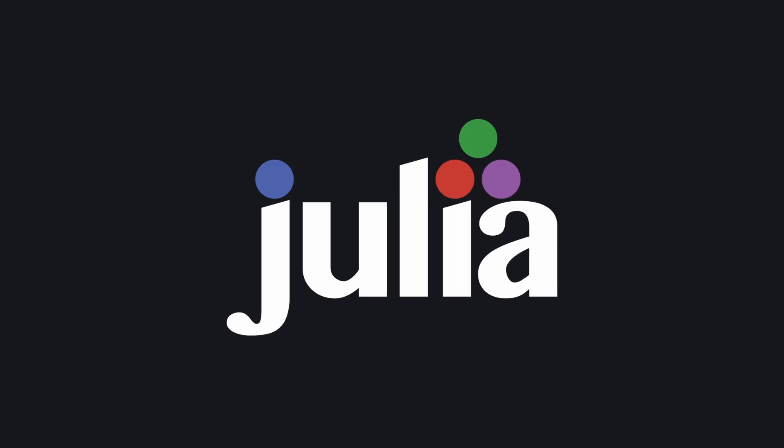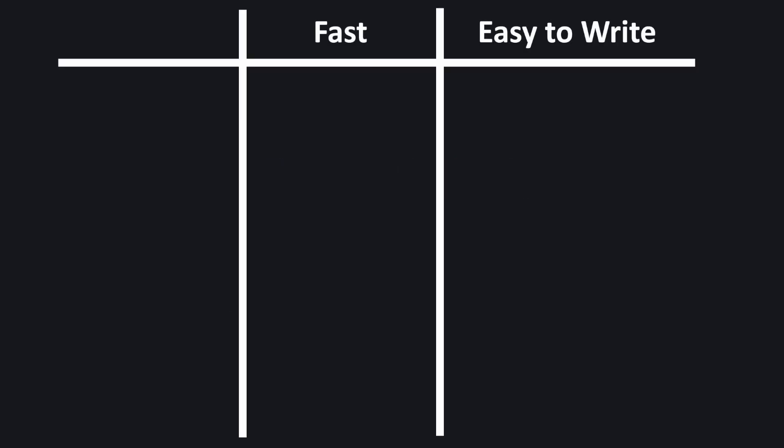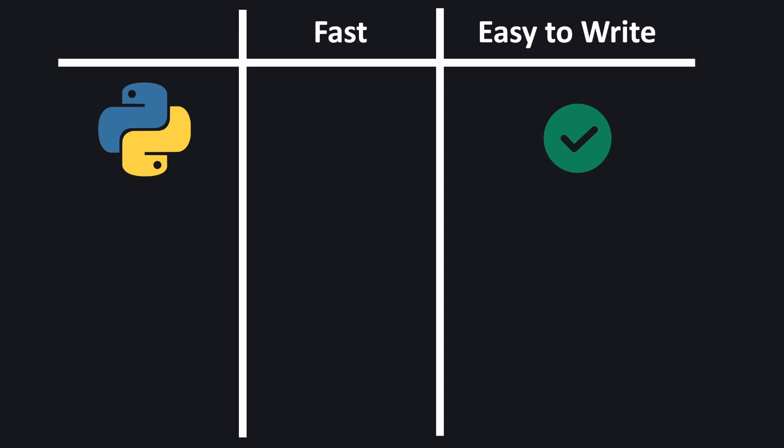Finally we'll talk about the language choice for this module, and of course this is Julia. Now Julia is a really interesting language and I hope all of you will enjoy learning it and using it throughout this course. There's a problem in the scientific computing community where we are often presented with two options: a language that is fast, or a language that is easy to learn and easy to write. Python is a great example — it's known for being very easy to write and easy to learn, and even people who aren't computer scientists can create really impressive things with it. However, Python is also known for not being the fastest language, and it often relies on other packages written in different languages to achieve the same speed.